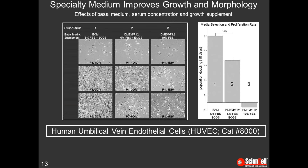Nine days later these differences are even more pronounced. The condition three cells with DMEM/F12 and 10% serum never reached confluency and were never subcultured — the cells just became very large. These images show that both the basal medium and the type of supplementation have a large effect on cell growth and morphology. Looking at cell proliferation via population doubling over 10 days, cells in the endothelial cell media grew the fastest, while condition two had 37% less growth. The HUVECs in condition three with DMEM/F12 and 10% FBS exhibited some initial growth after three days but after 10 days actually had a net loss. Importantly, the morphology of these cells was also suboptimal.